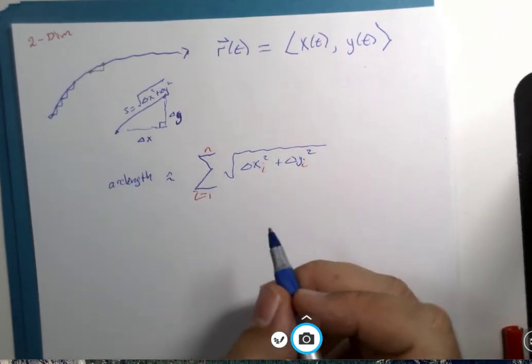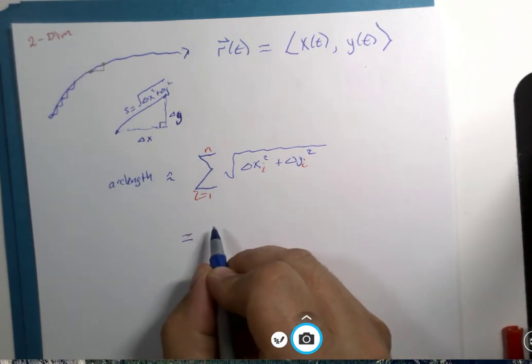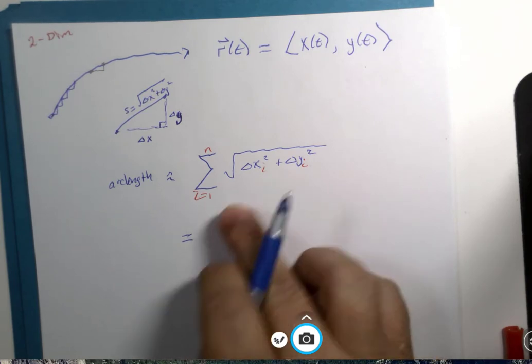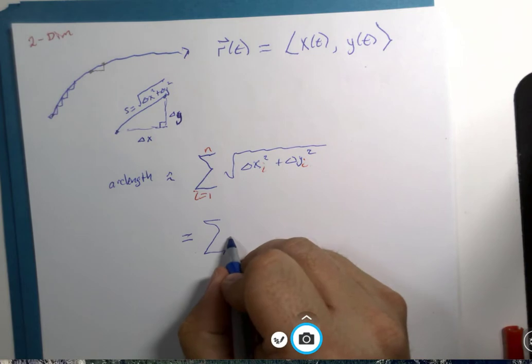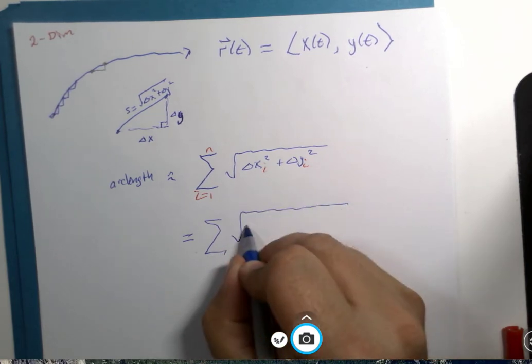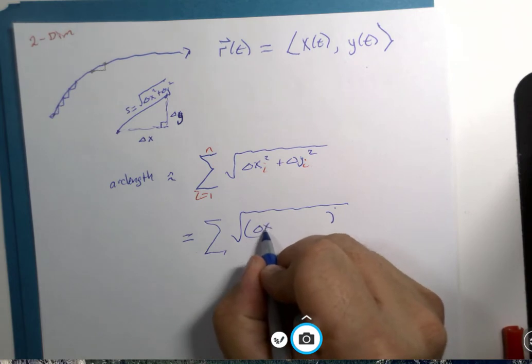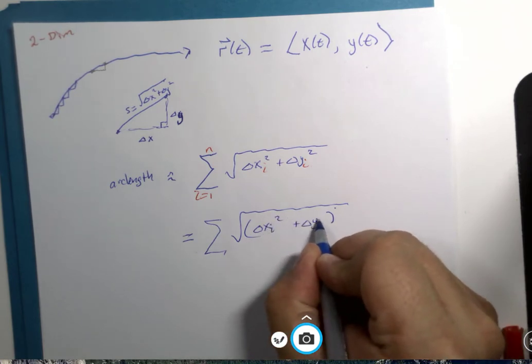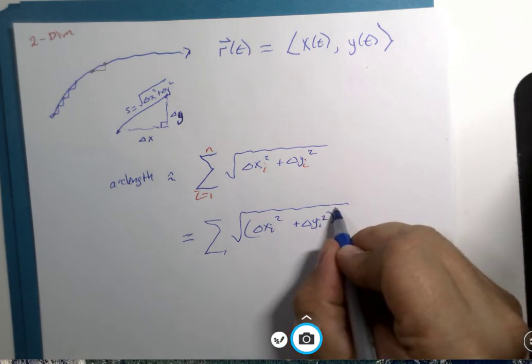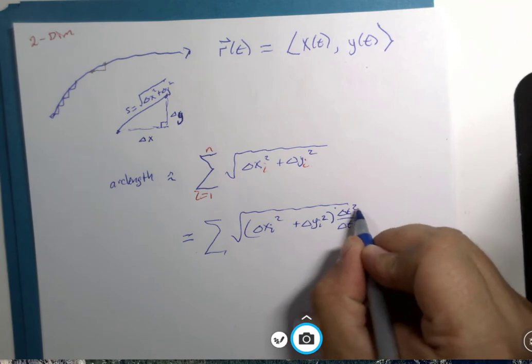So, let's see, so this expression, I can say, is equal to, so this is equal to the next expression. All right. Delta x_i squared. Delta y_i squared.